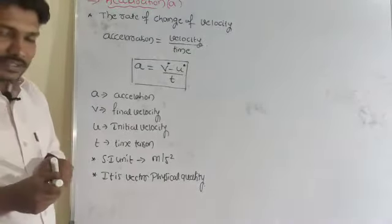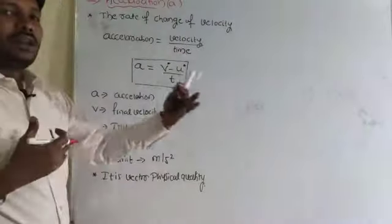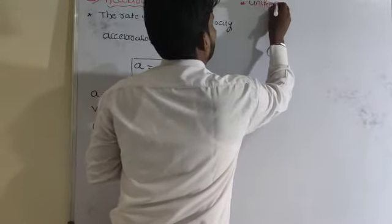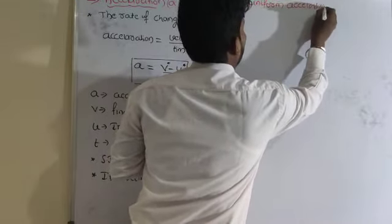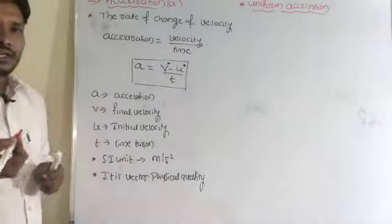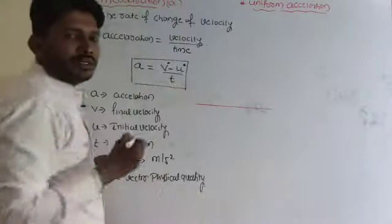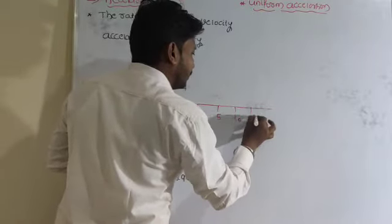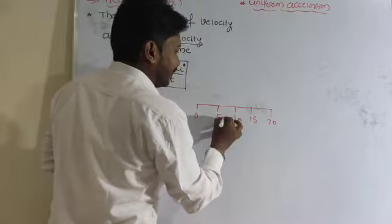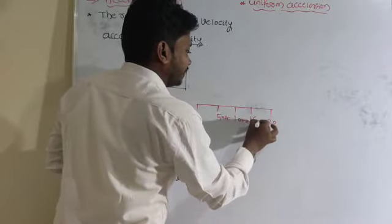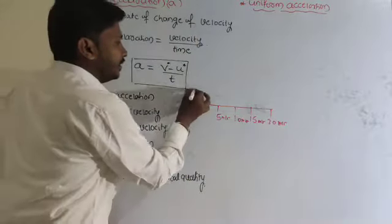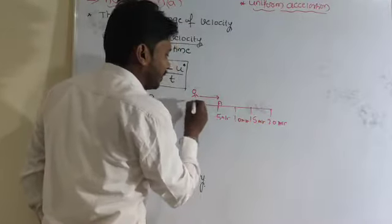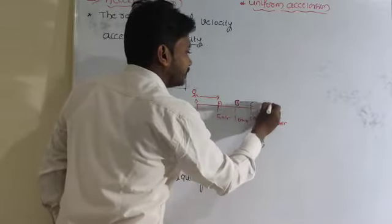Now we will look at what are the types of acceleration, similar to how we discussed speed and velocity. First, uniform acceleration: here one object is moving along a straight line with velocities 5 m/s, 10 m/s, 15 m/s, and 20 m/s at points O, A, B, C, and D respectively, each interval taking the same time.